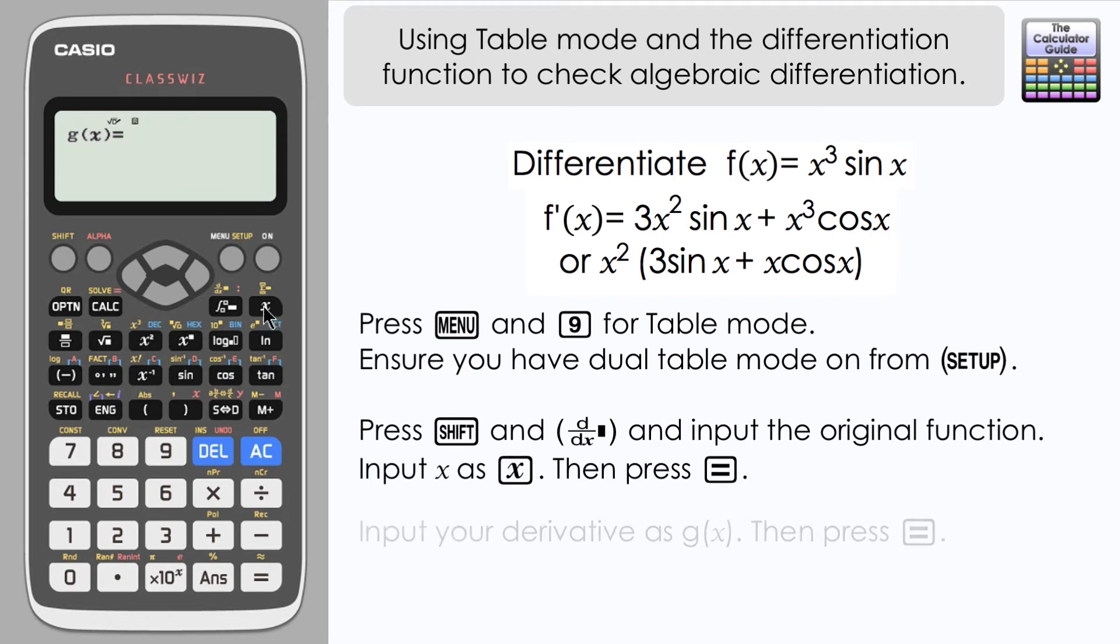And I will use the factorized version. That way I can check if my factorization is correct as well. So that's x² and then in brackets we've got 3 sin x. Again, remember to close your brackets off there. Plus x cos x and close the brackets off there. Okay, so that is my differentiated function. Press equals.